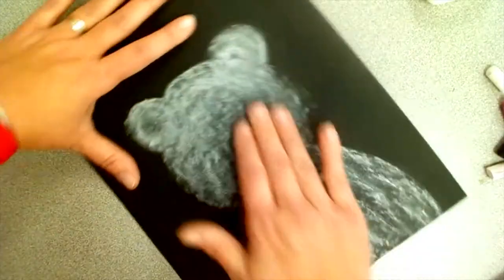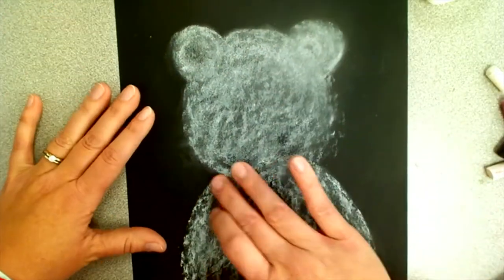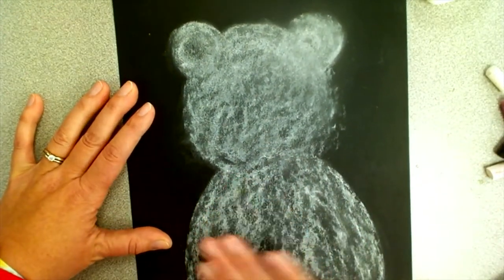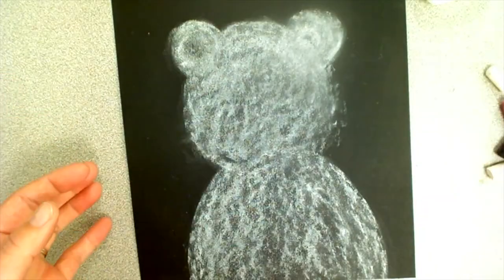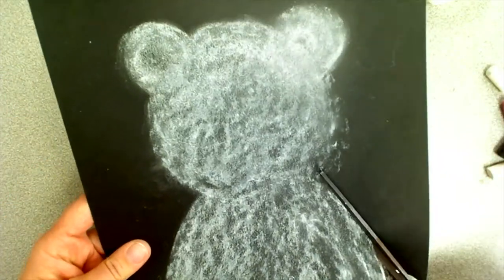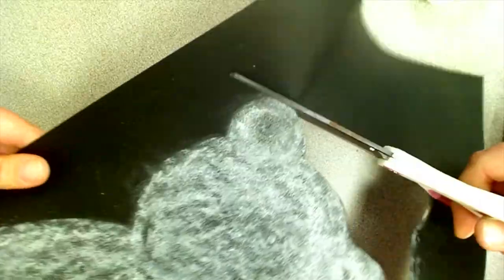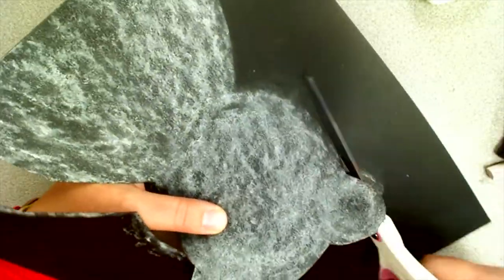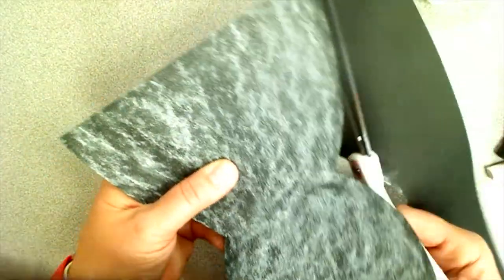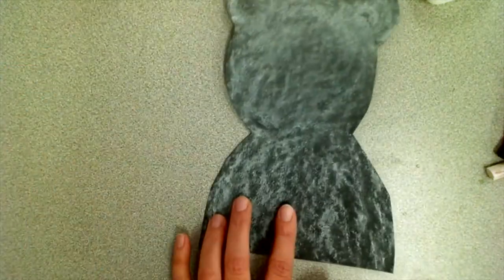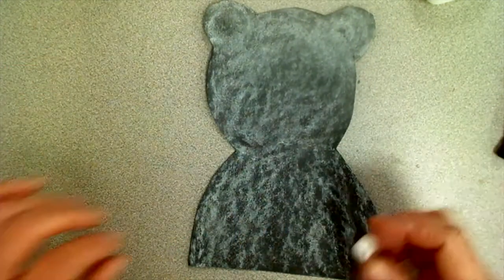Once you've smeared all the chalk, you can take some scissors and cut your polar bear out. Throw away your scraps and use glue to glue your polar bear onto a dark blue background.